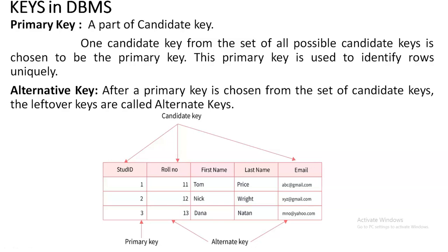Whenever you are creating a table, it is mandatory that the table should contain a Primary Key — at least one column should be uniquely identifiable.